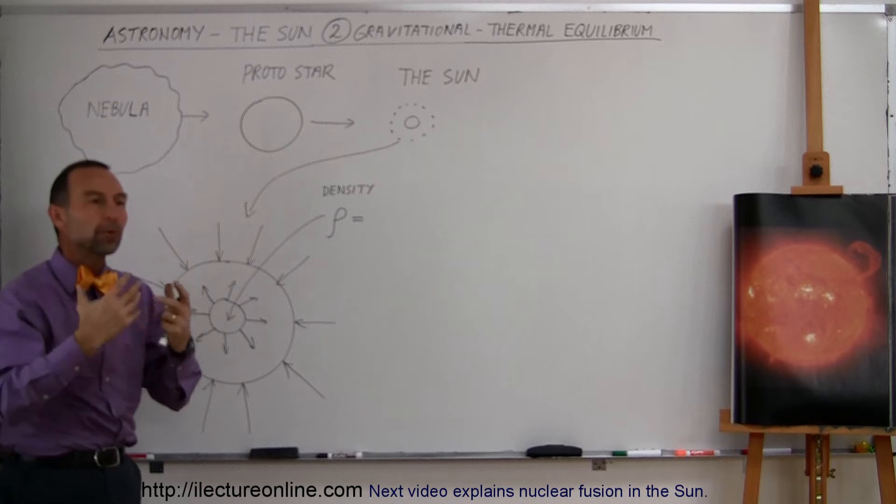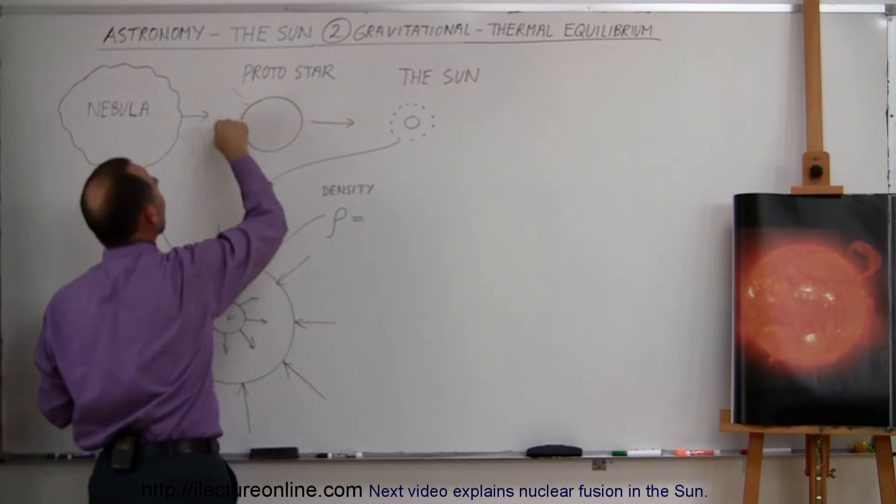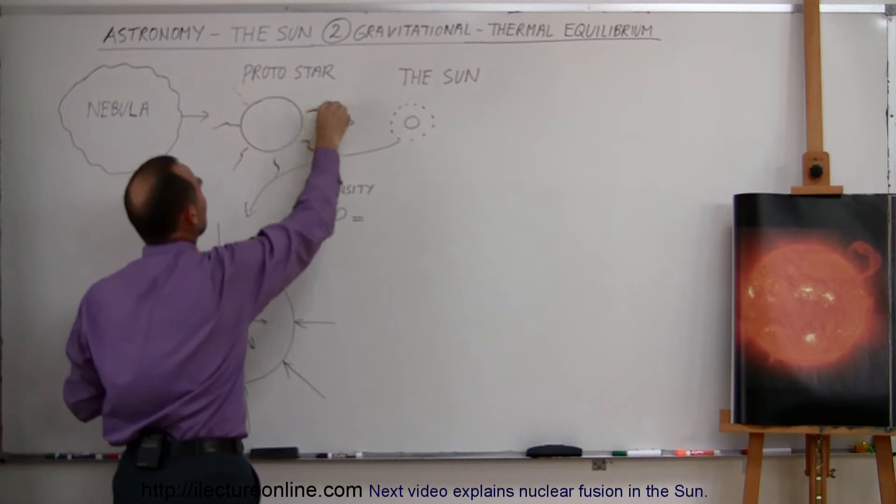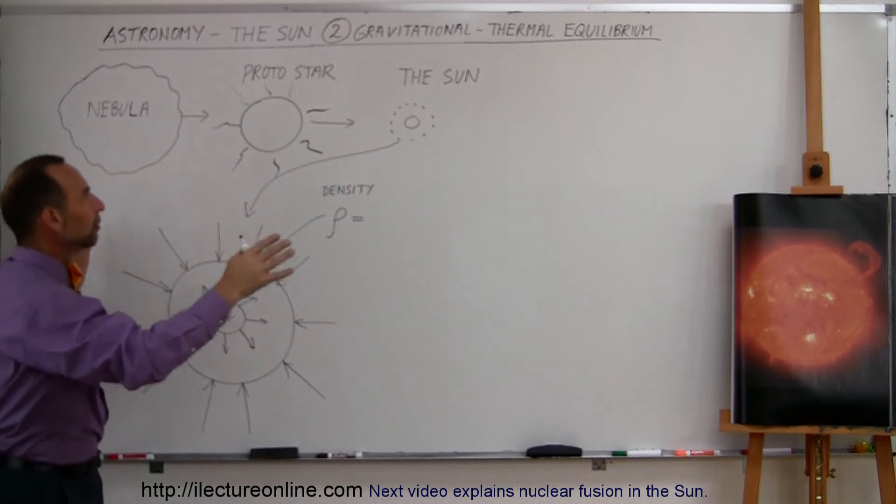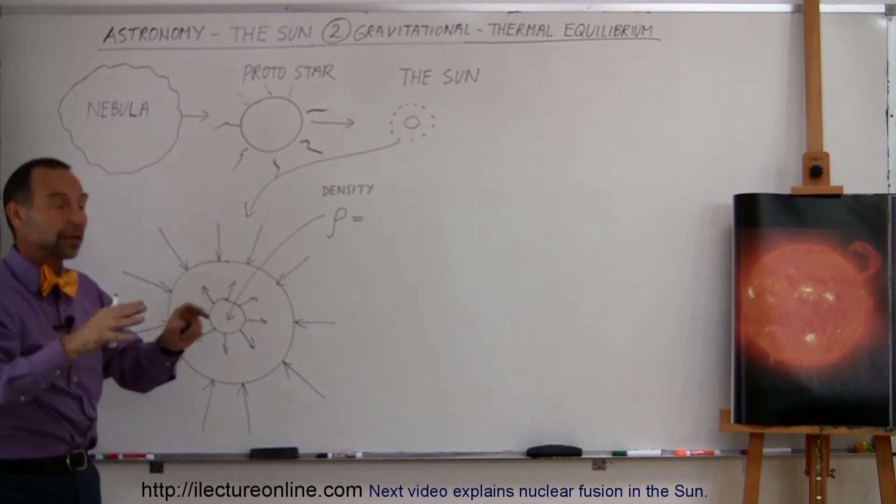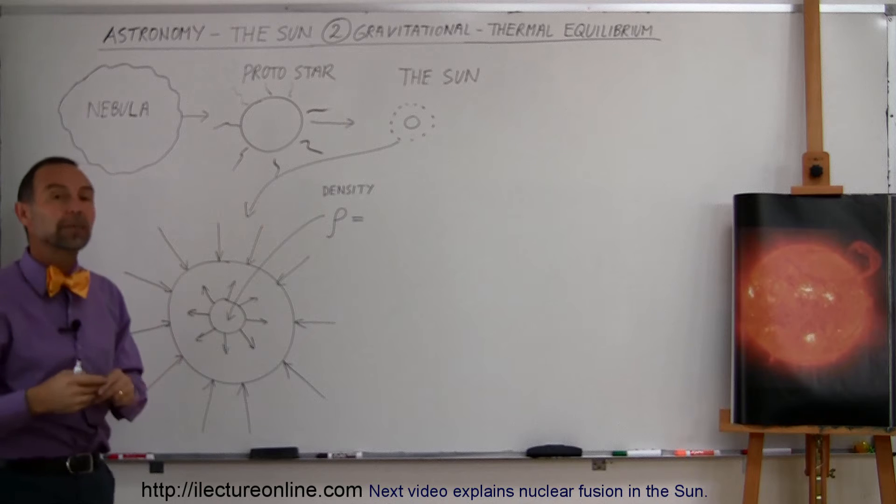And as the protostar gets warmer and warmer, it begins to glow, it begins to radiate energy off into space. And as we will find out later, this radiation that goes out into space will then have a tremendous effect on how the solar system around that budding star, that protostar, begins to form.